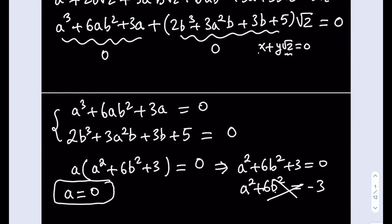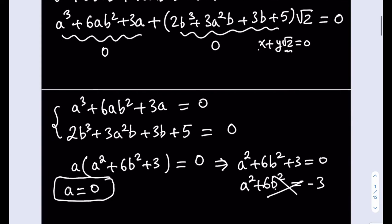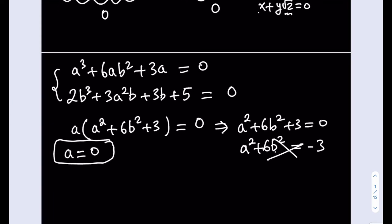If a is a real number, then it must be 0. That helps us a lot. Substituting a = 0 into the second equation, we get 2b³ + 3b + 5 = 0. This is still a cubic, but not as bad as the first one — the first one had a radical in it, and this one has all integer coefficients.